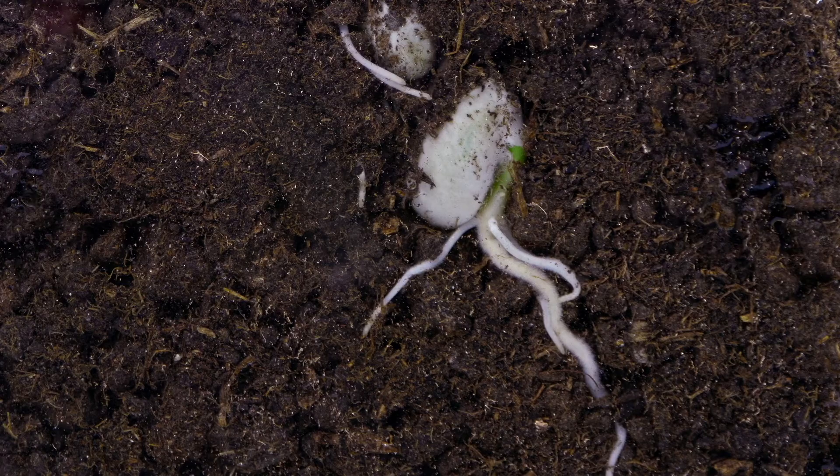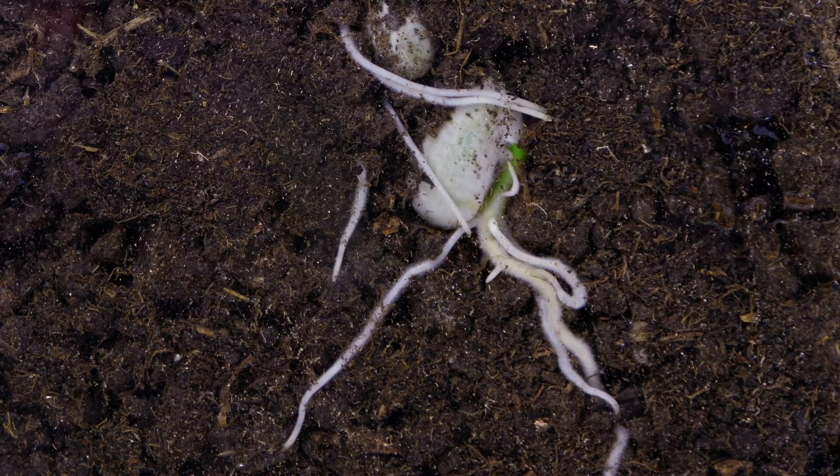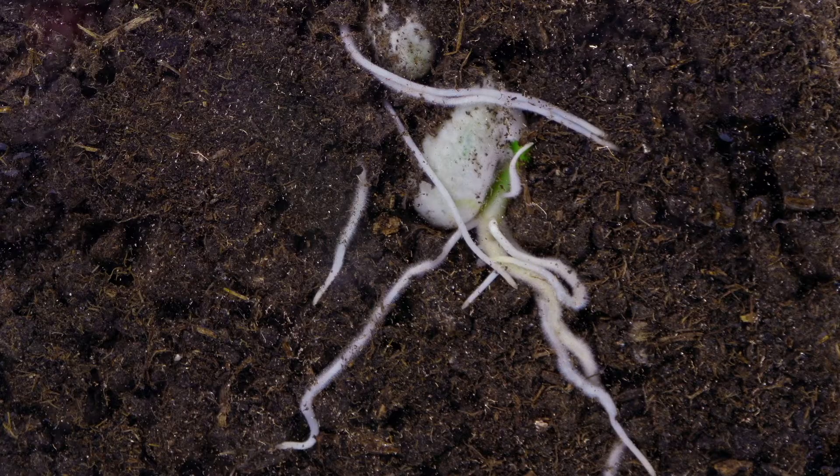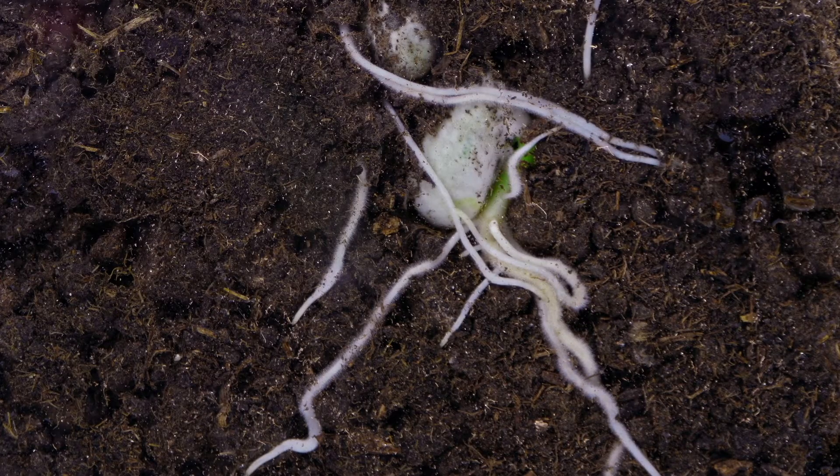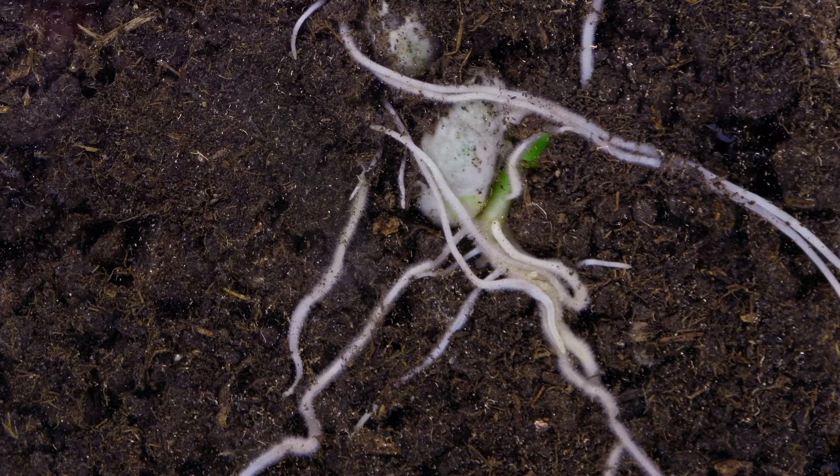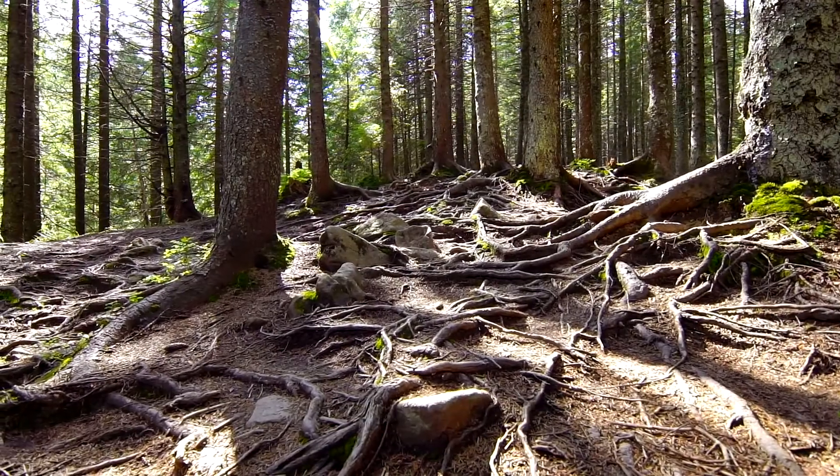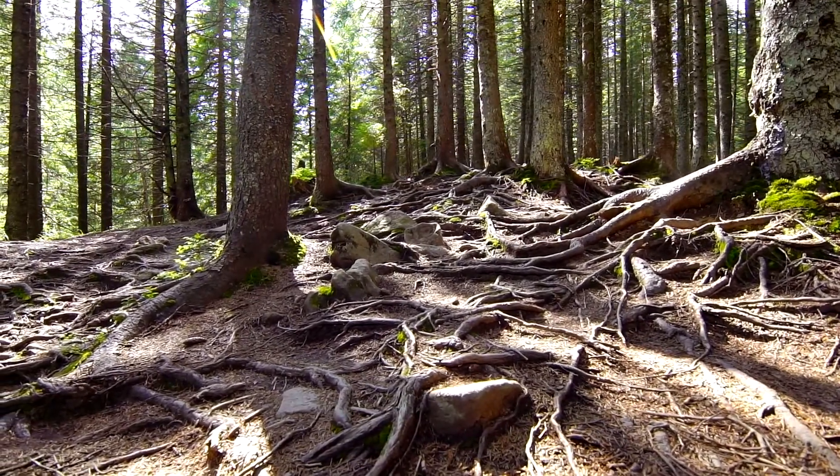This is where water and minerals are absorbed from the soil. The roots also serve to anchor the plant to the ground. Plant roots can extend several feet underground, and often spread out to a radius that is many times larger than the plant itself. Some large tree roots can even be visible above ground.